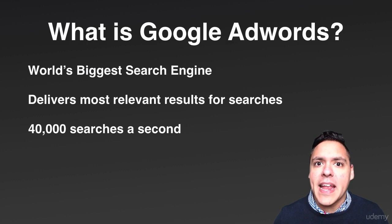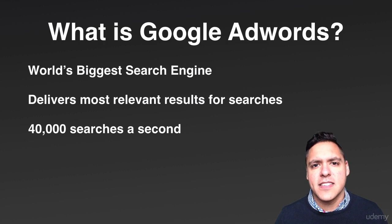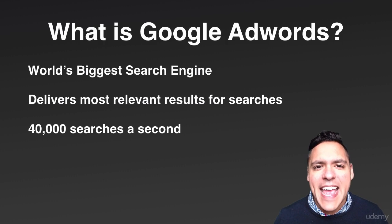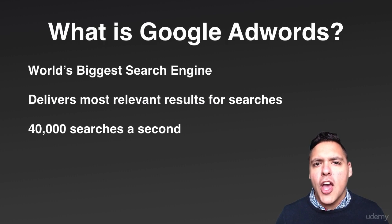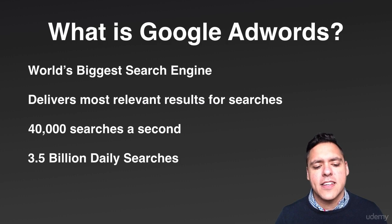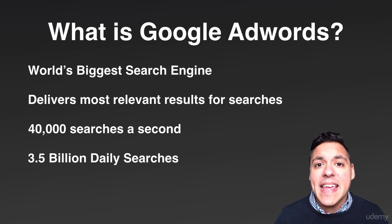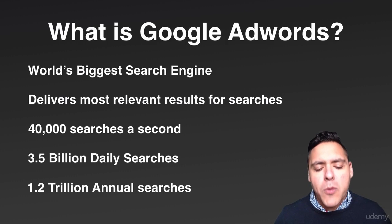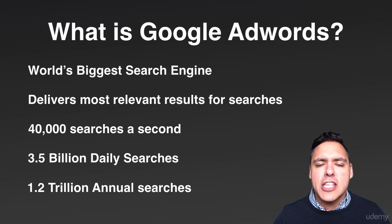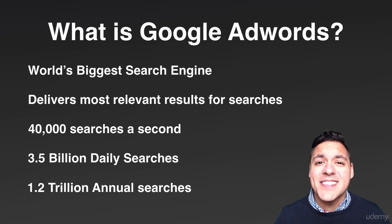These are some really unbelievable statistics. Number one, Google processes 40,000 searches a second — it gives you an indication that your product could appear to people during one of these searches. 3.5 billion searches are carried out on a daily basis, and 1.2 trillion searches are carried out on an annual basis. This gives you an indication of the potential traffic you have if your ad is showing for a particular search result.